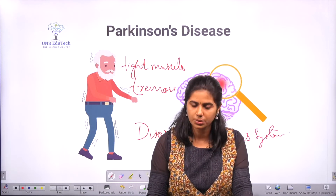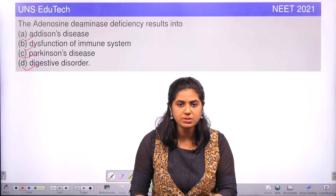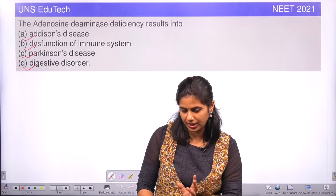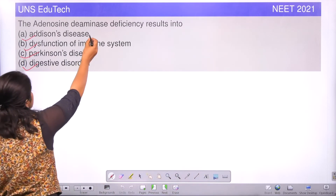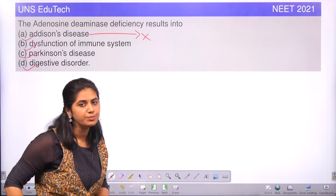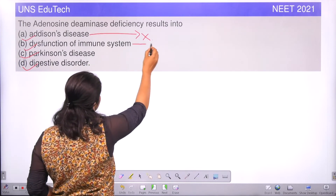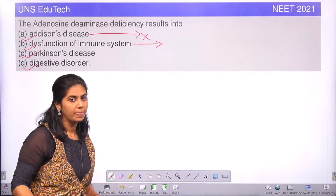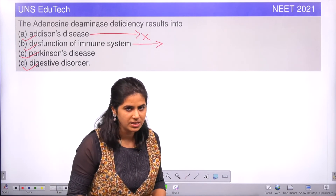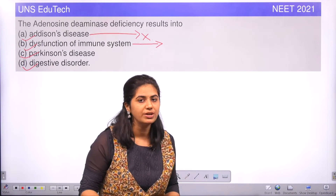Now let's go back to the question: what are the symptoms if we have a deficiency of adenosine deaminase? The first option, Addison's disease, is wrong because it is caused by insufficient production of steroids from the adrenal gland. The second option, dysfunction of the immune system — when we have a mutation in the adenosine deaminase gene on chromosome 20, the symptom is SCID, severe combined immunodeficiency. So this is the correct answer.